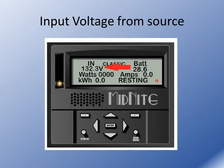Here we're showing the input voltage. This is coming in from your solar panels, your hydro, your wind turbine, or whatever the source may be. This is the actual voltage the Classic is measuring at this time.